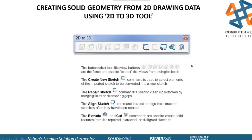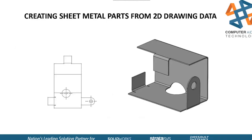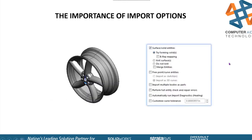One of the things I use this method a lot for is creating sheet metal parts. Many times you have a DXF that's legacy data — you pull that into your file and then use your sheet metal properties: sketch bends, flats, tabs, any kind of sheet metal features you'd like. Now, the importance of import options: there are a lot of options available to us. I'm going to open a tire rim in a few different ways to show you how important some of these checkboxes are.